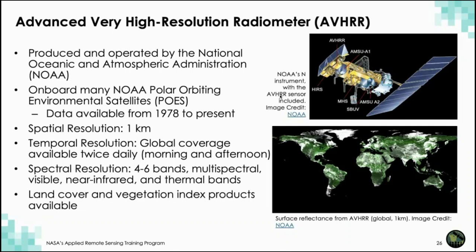The Advanced Very High Resolution Radiometer, or AVHRR, can also be used for ecosystem monitoring. It's operated by NOAA and flies on the POES satellite. The 'very high resolution' is a bit of a misnomer because the spatial resolution is about one kilometer; the name refers to the temporal resolution due to the revisit time. Similar to VIIRS and MODIS, AVHRR can be used for quickly changing events like wildfires, flooding, and flowering. It has six spectral bands including near-infrared, mid-infrared, and thermal bands, and there are global products like the global land cover product produced by NOAA that are really useful from AVHRR.